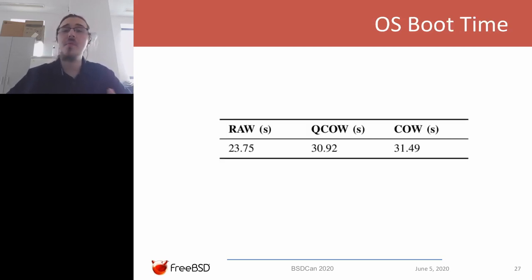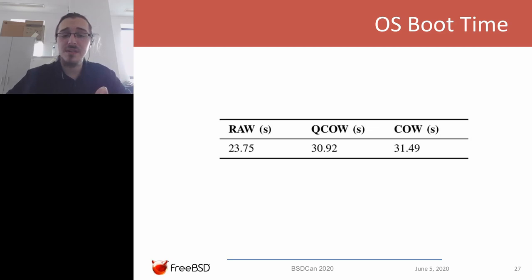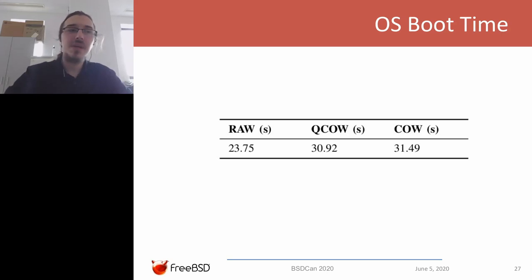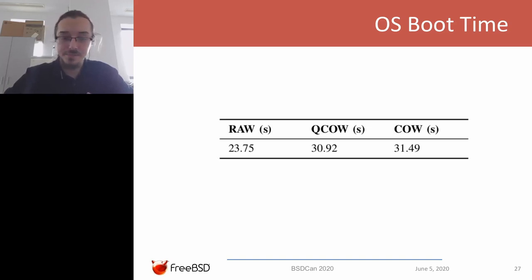The next test is a more read-intensive operation — an OS boot test measuring how long it takes for the Linux OS to boot from a shut-off virtual machine to a console prompt. For a raw disk we have 23 seconds, and QCOW2 has more but not that much more. The copy-on-write disk proves to be a bit faster than plain QCOW2 for read operations because it doesn't have to create new L2 tables, and writes do more IO operations than reads.